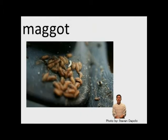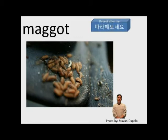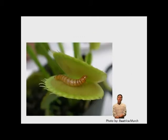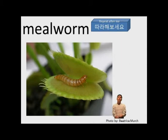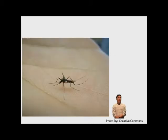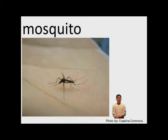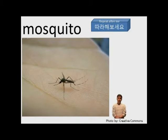Maggot. Maggot. Maggot turns into a fly later. One more time. Maggot. We have a mealworm. Mealworm. One more time. Mealworm. We have mosquito. Mosquito. Mosquito. I don't like mosquitos. One more time. Mosquito.